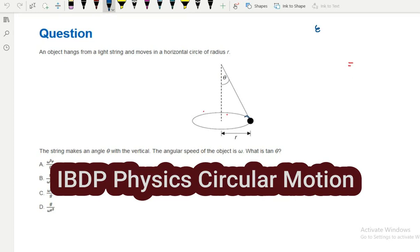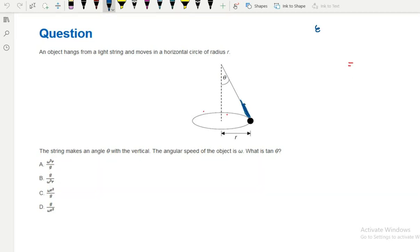This is the tension T and this is the weight of the object which is M times G. I can break down T into components: one component in the y-axis called Ty and the other one in the x-axis which is Tx.